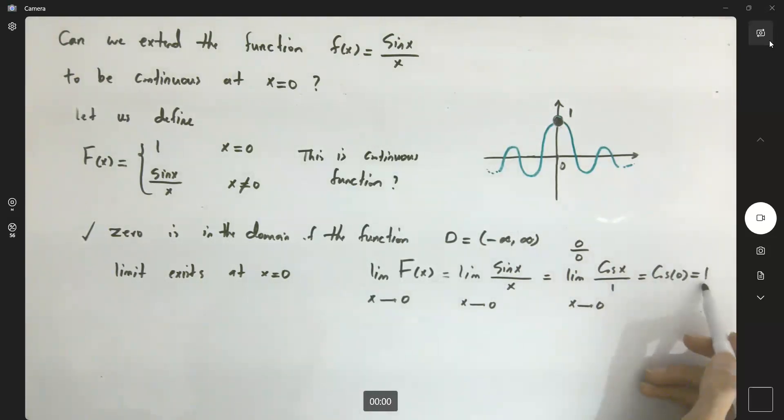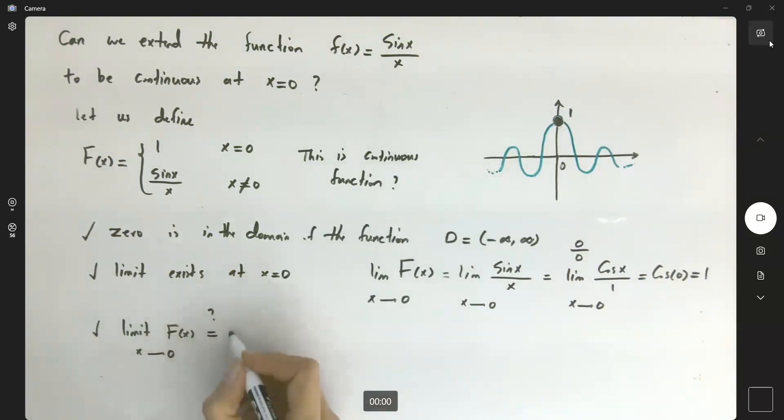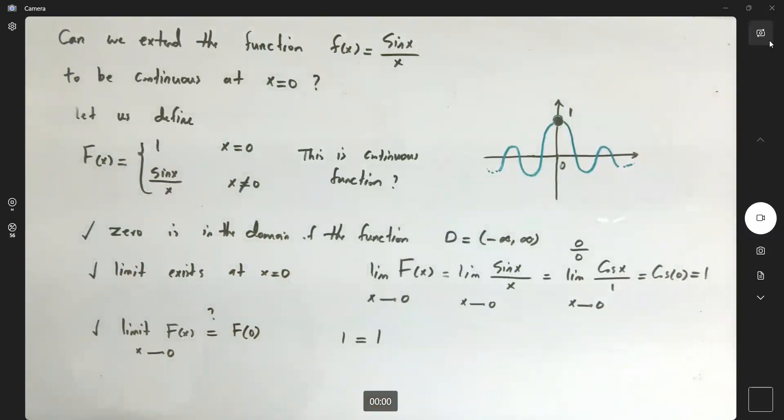As you can see, the limit exists. Now, the limit of the function as x approaches 0 must equal the output value at 0. We just showed that the limit is 1 and F(0) = 1. So the third condition is also met.